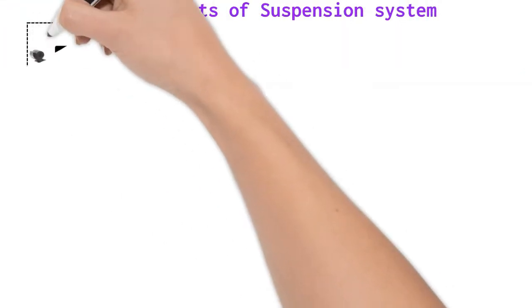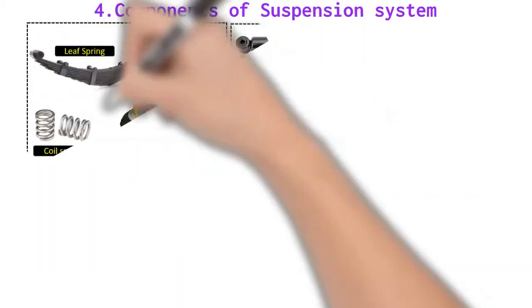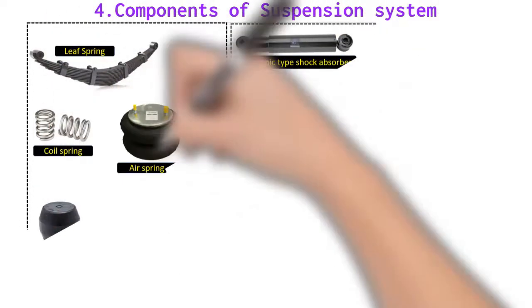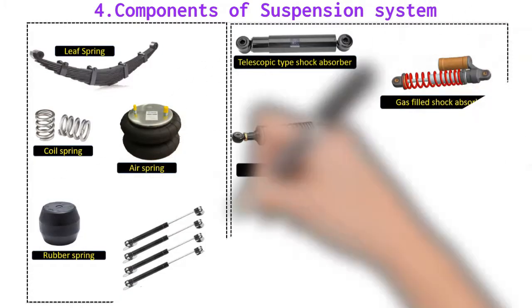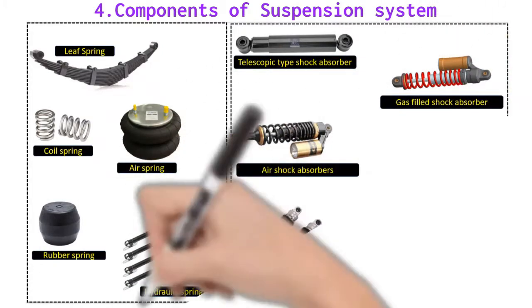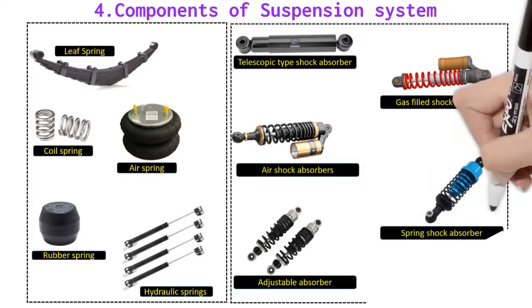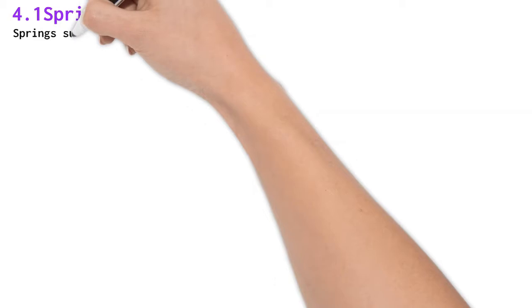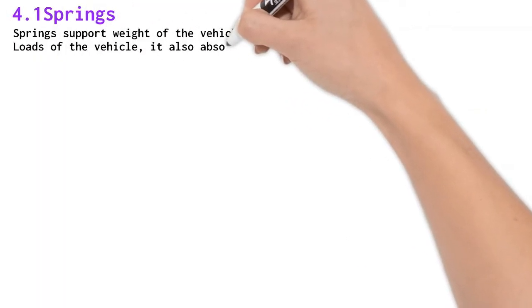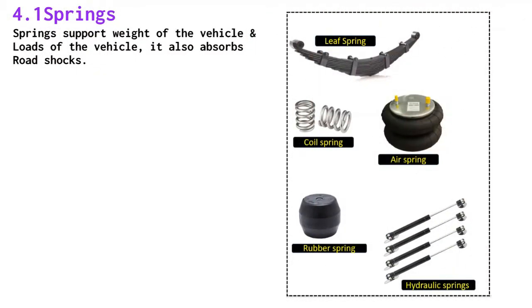Components of suspension system. The components of suspension system include springs and related parts that support the weight of the vehicle body on axles and wheels. Springs and shock absorbers are the two main parts of the suspension system. Springs support the weight and loads of the vehicle and also absorb road shocks.